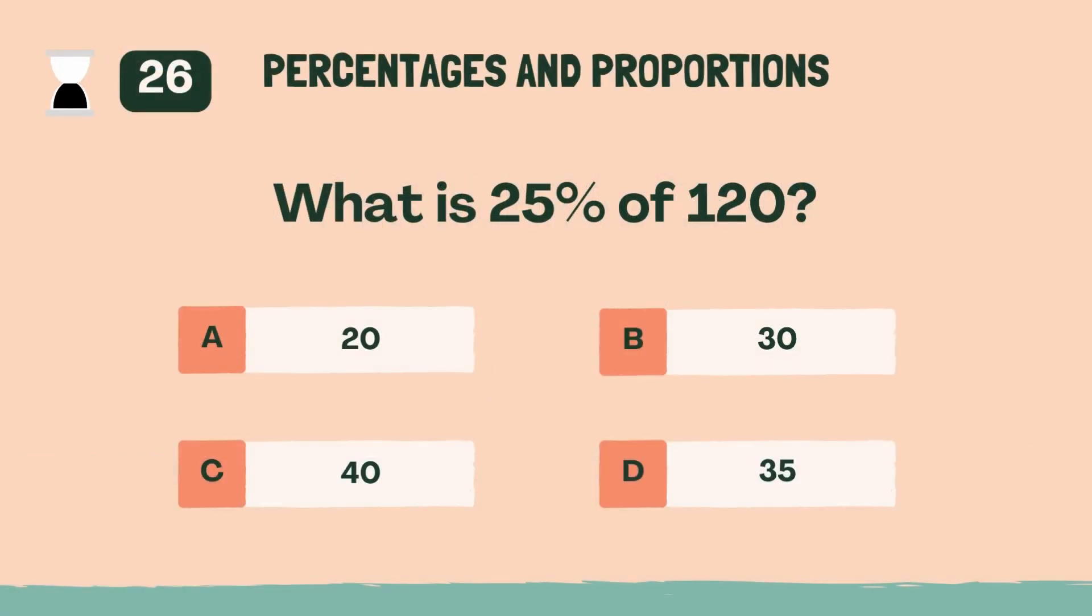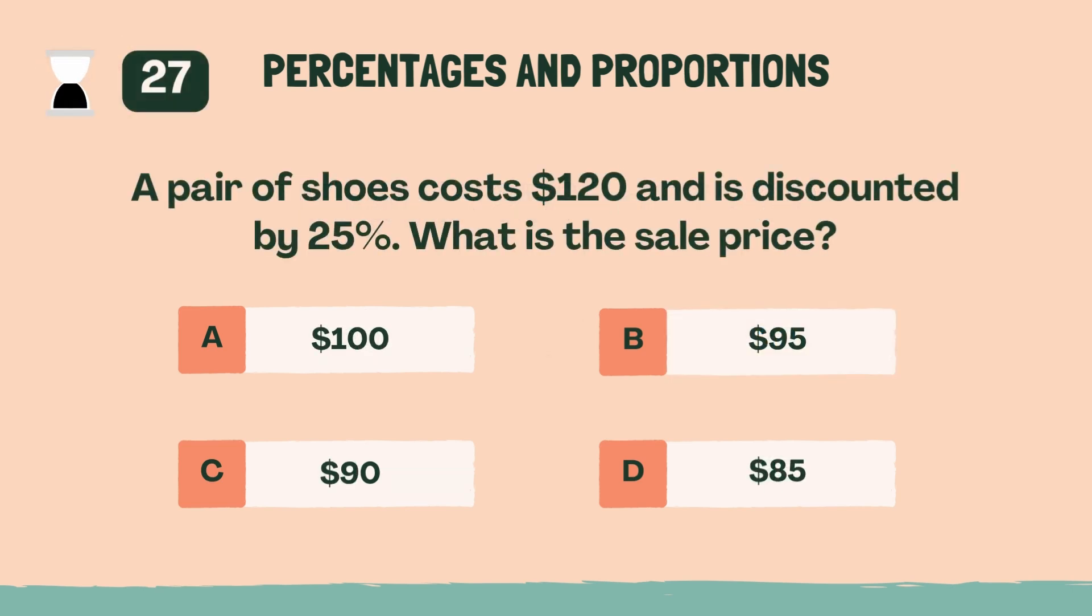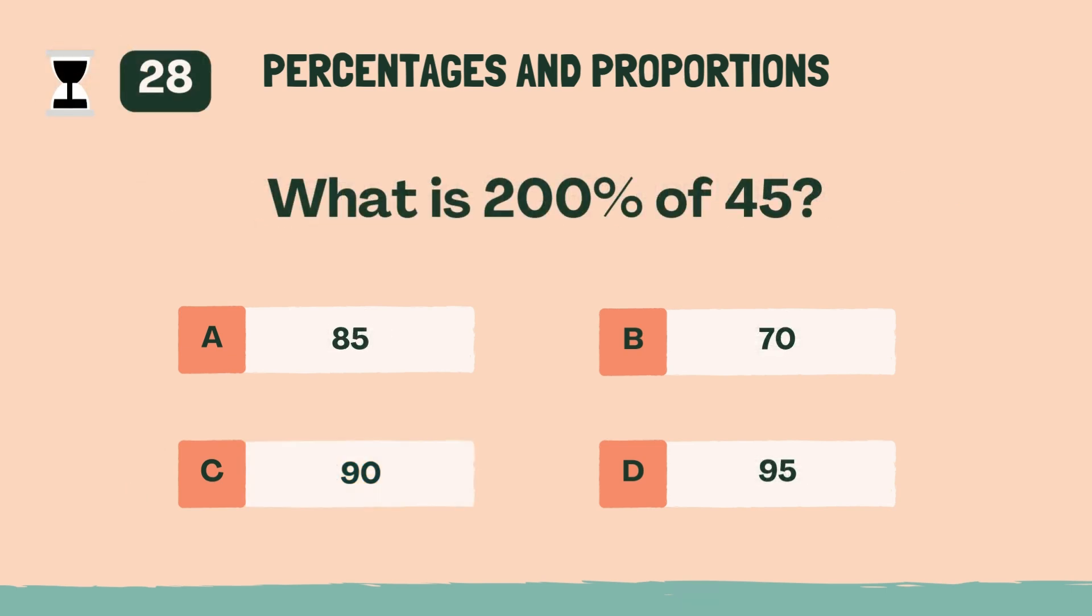What is 25% of 120? B, 30. A pair of shoes costs $120 and is discounted by 25%. What is the sale price? C, $90. What is 200% of 45? C, 90.